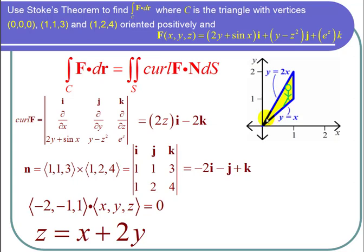So for the double integral, the little man's feet are on y equals x. The little man's head is on y equals 2x. The farthest to the left the little man can get is 0, and the farthest to the right the little man can get is 1.